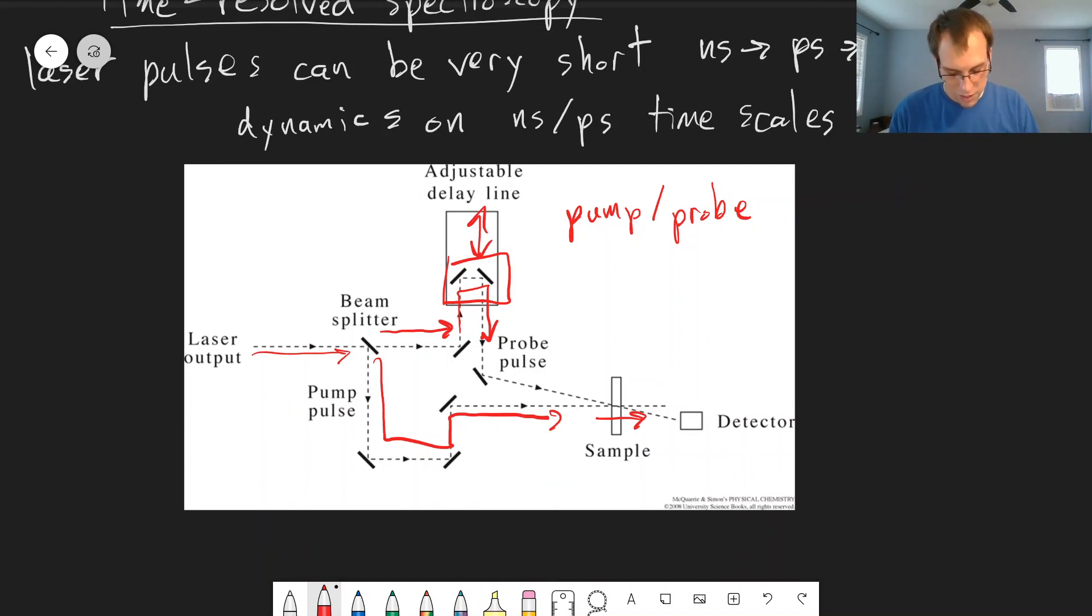We can change this adjustable delay line to measure things as a function of the time difference between the pump and probe pulse. This allows us to measure, for example, the ICN molecule in the gas phase.